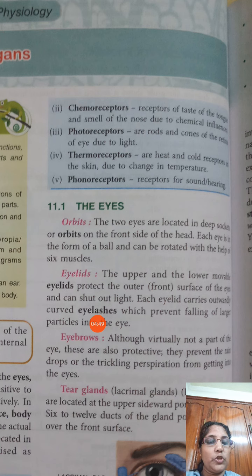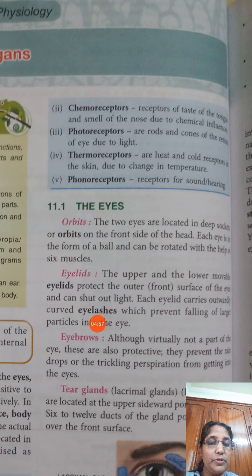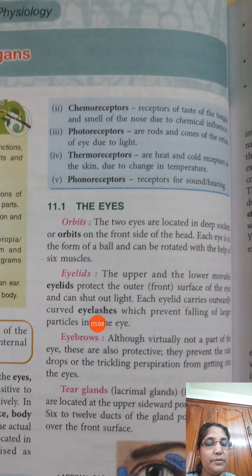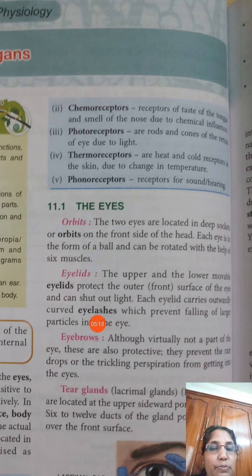Another structure above the eye — it is not a part of the eye but is also for protection — the eyebrows. Eyebrows prevent raindrops or trickling perspiration from entering the eye. They can also prevent the falling of dust particles.